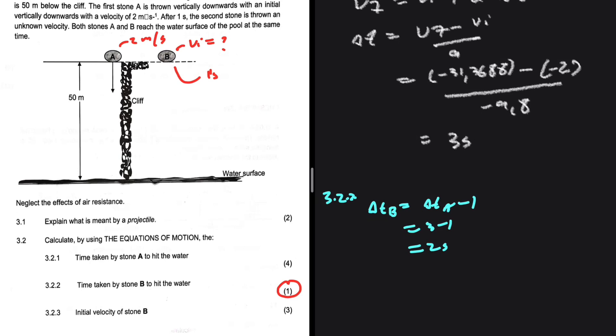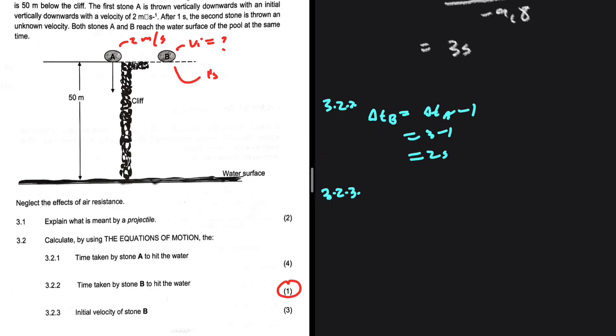3.2.3: the initial velocity of stone B. Let's look at the information we have with regards to stone B. We have delta t = 2 seconds, we have vi which is what we're interested in, we have delta y = -50 because up is always positive, and our acceleration is -9.8. What am I looking for? I'm looking for vi.